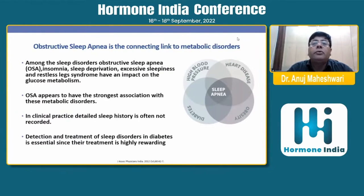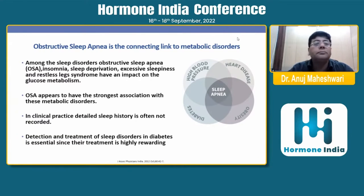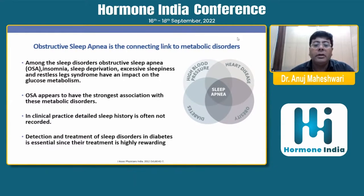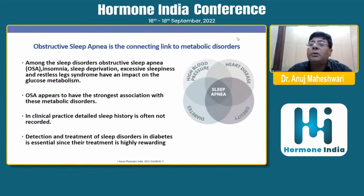Obstructive sleep apnea is a very important risk factor for metabolic disorders. Among sleep disorders — obstructive sleep apnea, insomnia, sleep deprivation, excessive sleepiness, and restless leg syndrome — all have an impact on glucose metabolism, with obstructive sleep apnea appearing to have the strongest association. In clinical practice, detailed sleep history is often not recorded, yet detection and treatment of sleep disorders in diabetes is essential as their treatment is highly rewarding. High blood pressure, heart disease, diabetes and obesity are all generated through sleep apnea.